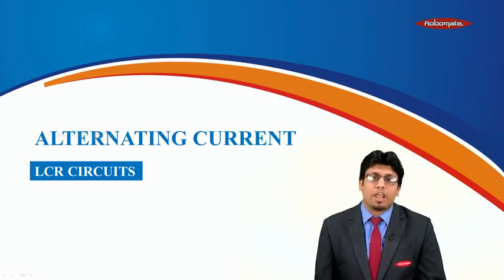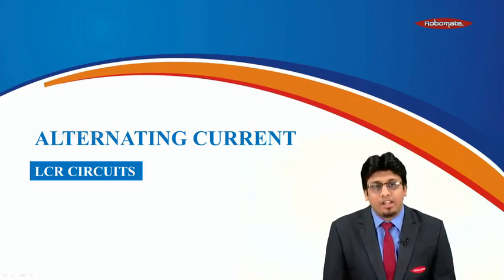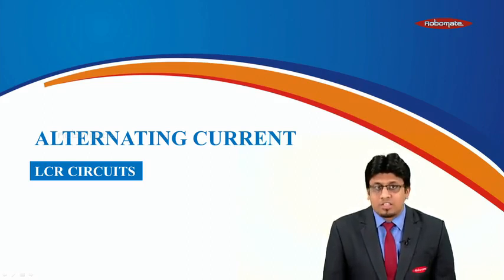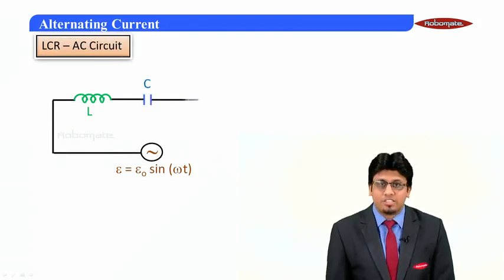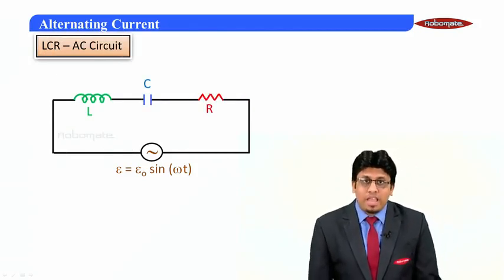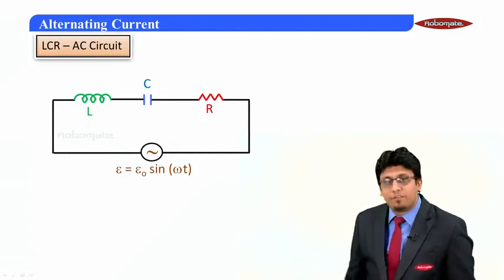That means in a circuit we have all three: the inductor, the capacitor, and the resistor. So let's take the discussion further and consider an AC circuit with L, C, and R as shown in this particular figure.